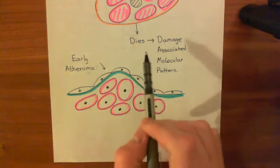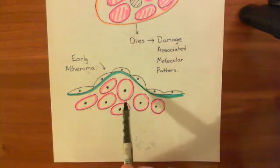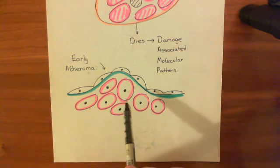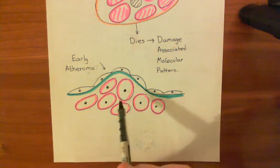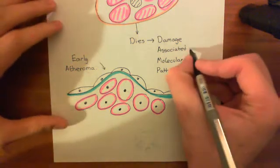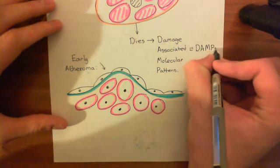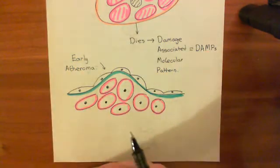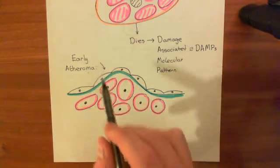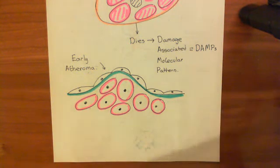This is a perpetuating cycle, because the foam cells, now and again, will die because of the oxidized lipids they have taken up. When they die, they're going to release loads of damage-associated molecular patterns, abbreviated as DAMPs. These DAMPs are going to further drive the inflammatory response — driving more monocytes to come in, more LDL to come in, and driving the formation of more foam cells. So once it's begun, it's going to continue.